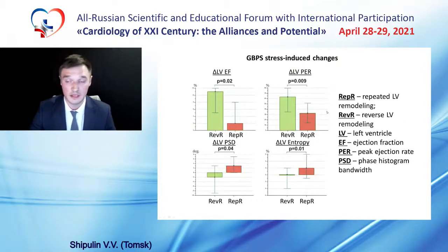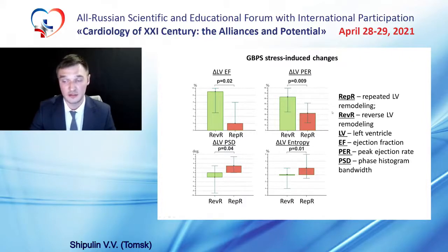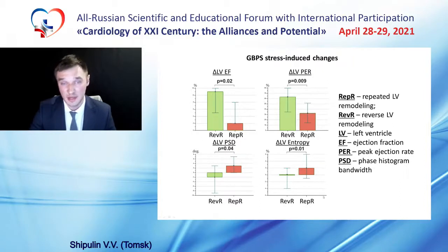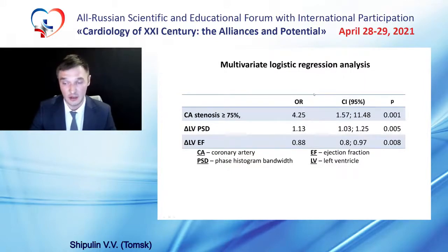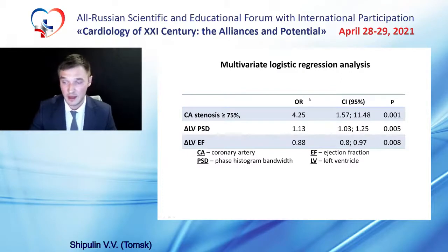According to gated blood pool SPECT, there was a significant difference in stress-induced changes in systolic function and mechanical dyssynchrony between groups. By the results of logistic regression, all mentioned parameters except entropy were independent predictors of left ventricle remodeling.